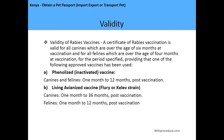Validity period: a certificate of rabies vaccination is valid for all canines over the age of six months at vaccination and for all felines over the age of four months at vaccination, for the periods specified, provided that an approved vaccine is used. A phenolized vaccine gives both canines and felines a validity period of one to twelve months after vaccination.